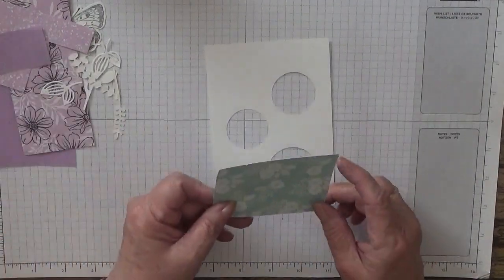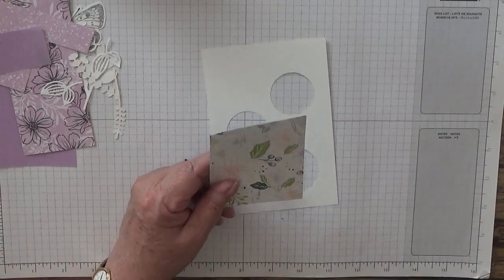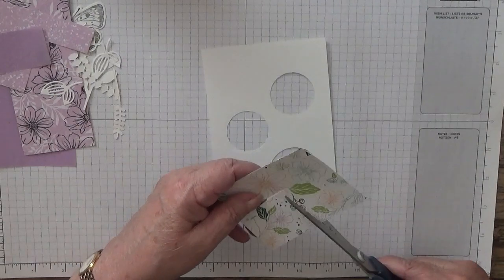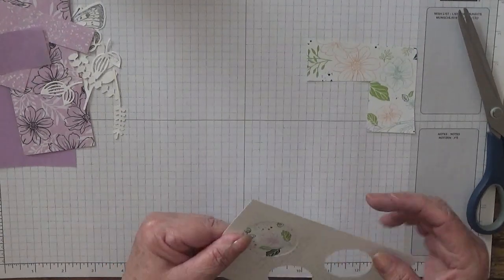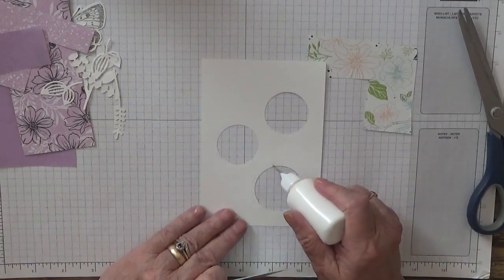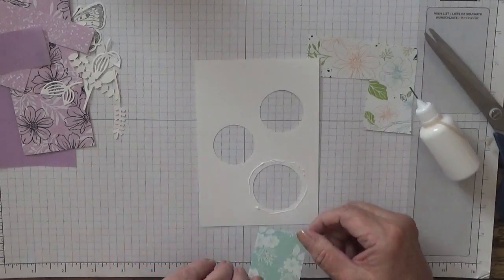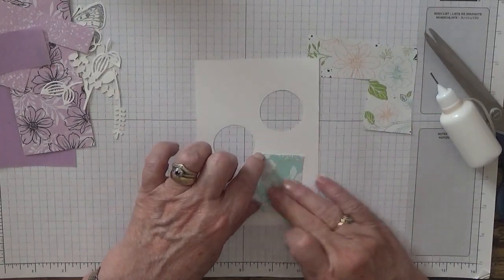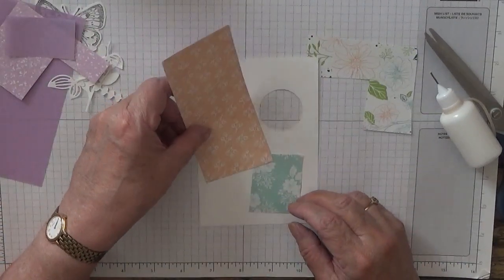Now we're going to turn it over. We're going to start adding some bits of colored paper. I need to get the fresh freesia in the picture. Get some glue and I just glue around the circle and add that in.